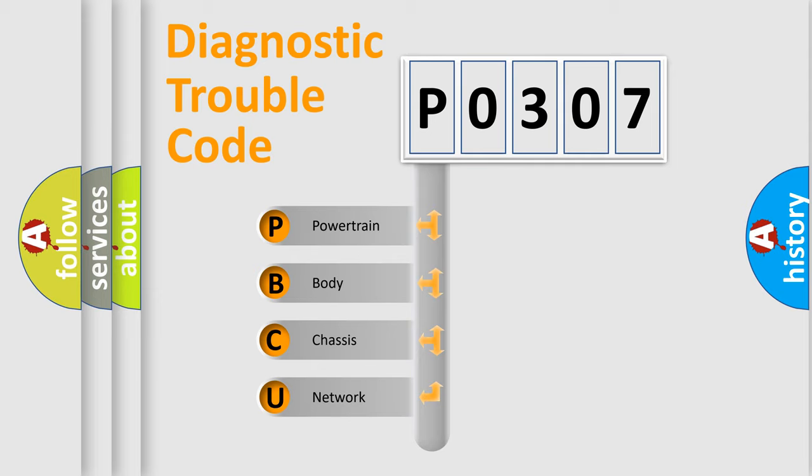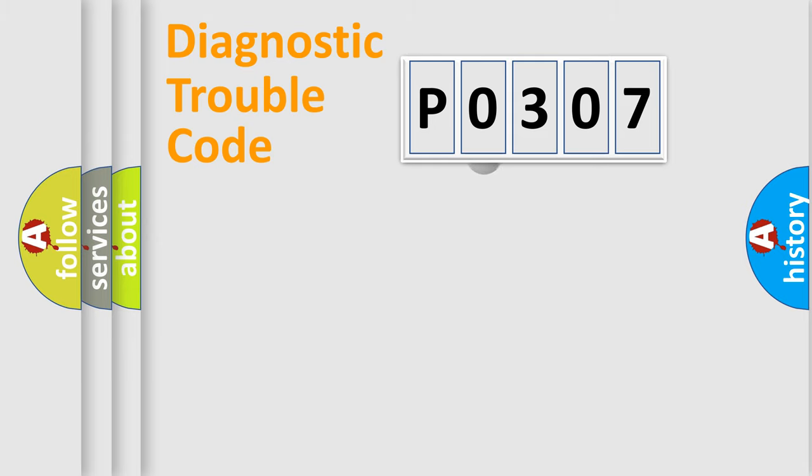We divide the electric system of automobile into four basic units: Powertrain, Body, Chassis, and Network. This distribution is defined in the first character code.